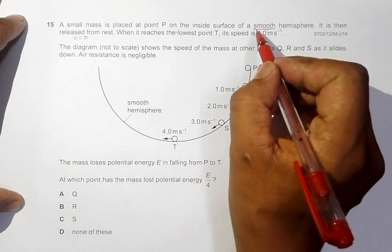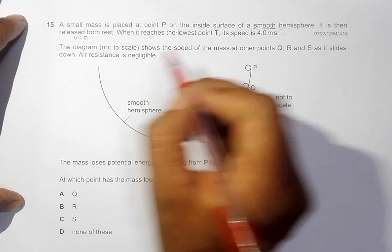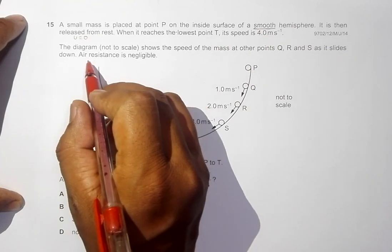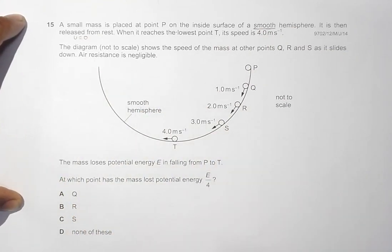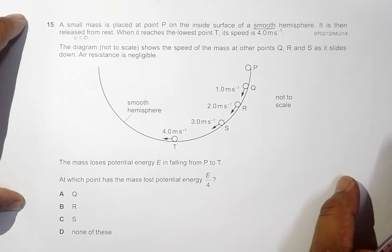Air resistance is negligible. So here we have two conditions: one is the smoothness of the hemisphere, and the other is that air resistance is negligible. That means there are no resistance forces at all of any kind.